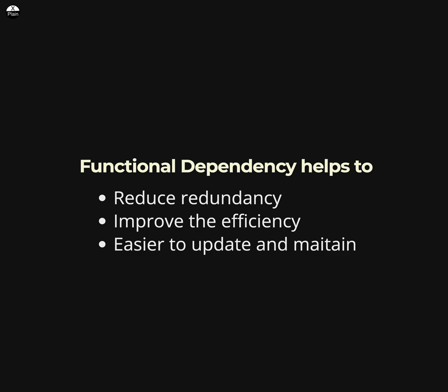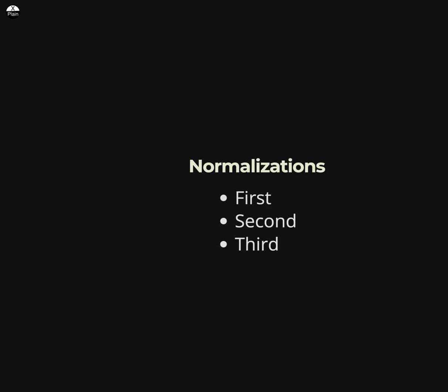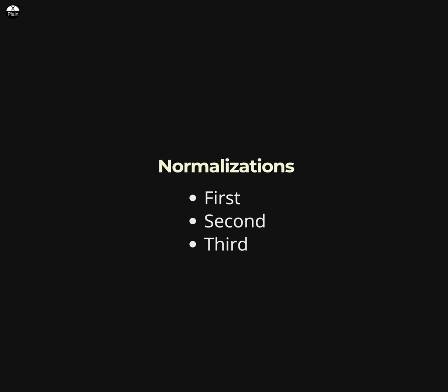Functional dependency theory is also used to define the properties of a database design, such as normalization. Normalization is a process used to optimize the design of a database by minimizing redundancy and dependency. There are several normal forms used to measure the degree of normalization in a database design, with the most common being the first, second, and third normal forms.